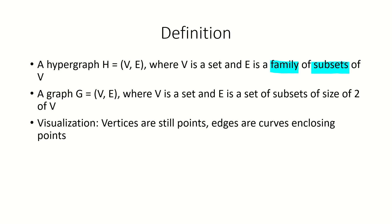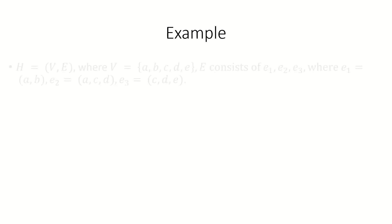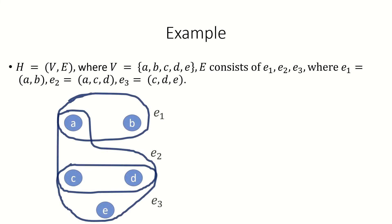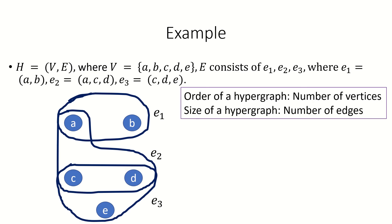When we visualize a hypergraph, the vertices are depicted the same as in graphs, except an edge in a hypergraph is a closed curve that encloses the vertices incident to that edge. For example, if we had this hypergraph, here is one way we could visualize it. Just like in graph theory, the order of a hypergraph is the number of vertices, and the size is the number of edges. In this example, the order is 5 and the size is 3.